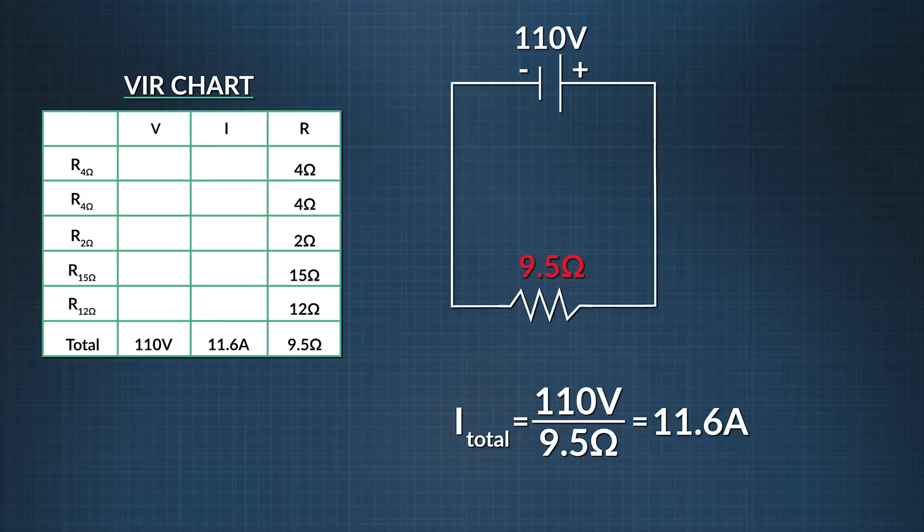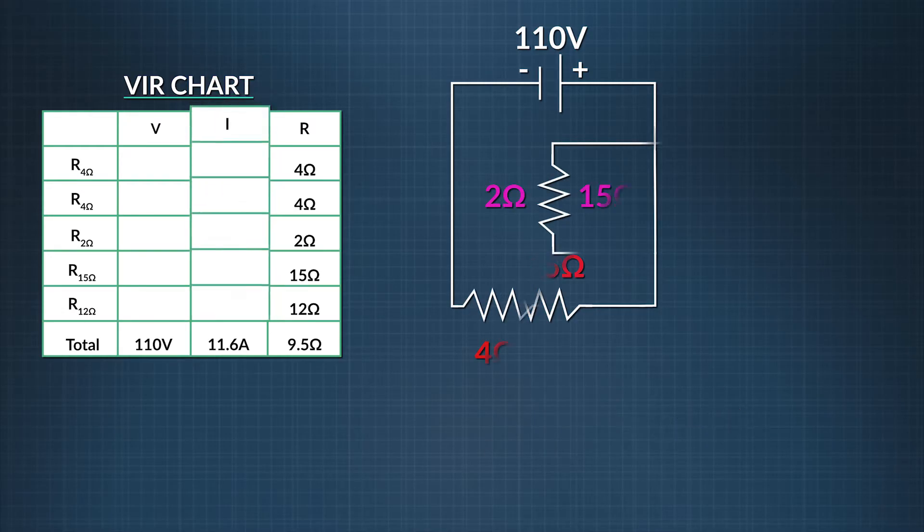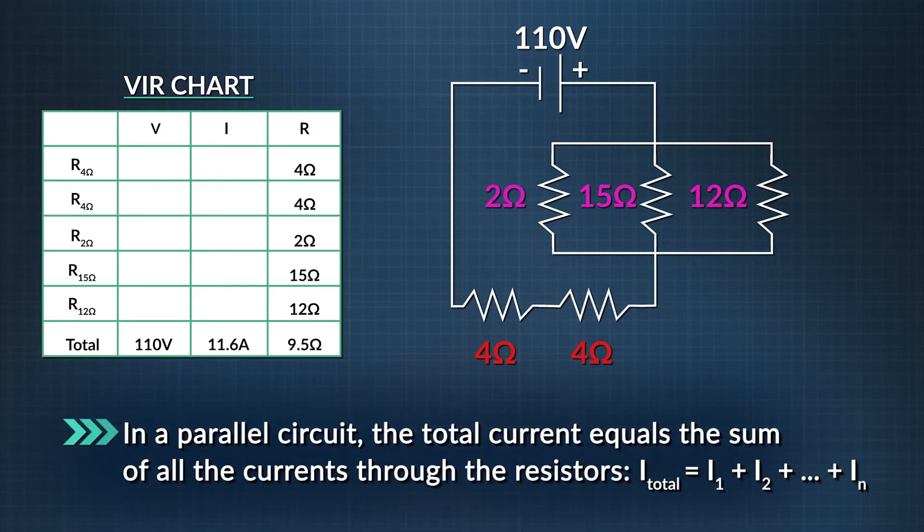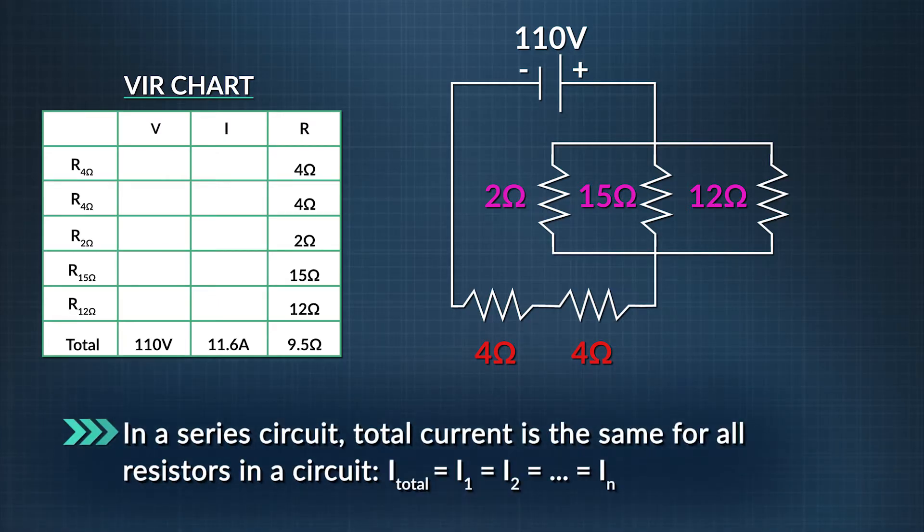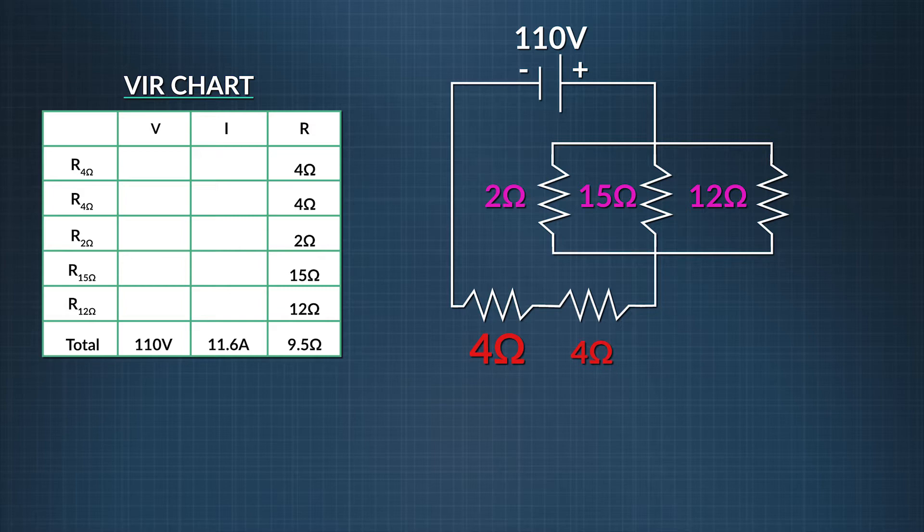We can choose among several options to fill in the rest of the blanks. We just choose one and go with it. Let's figure out the current in each of the five circuit resistors. We'll use the fact that in a parallel circuit, the total current equals the sum of all of the currents through the resistors. And in a series circuit, total current is the same for all of the resistors in a circuit. Right away, we know the current running through the two 4 ohm resistors that are in series is 11.6 amps. So we put 11.6 amps as our current for those resistors in our chart.